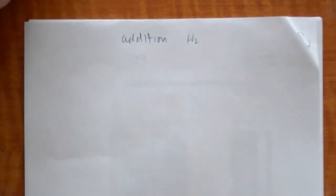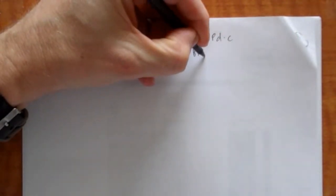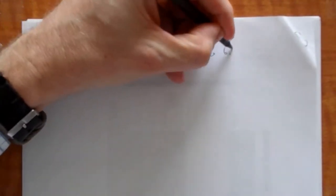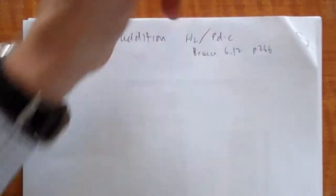All right, so the final mechanism that I want to do for addition is that of catalytic hydrogenation, H2. And I think that Bruce exclusively uses Pd/C. And this is in section 6.1. This is Bruce, 6.12, page 266.